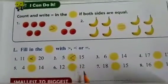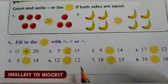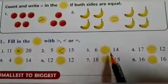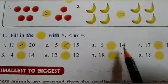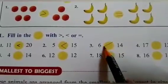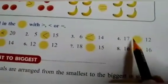Six and fourteen, which is greater? Fourteen. Seventeen and twelve - seventeen is greater, so we will put the sign of seventeen towards it.